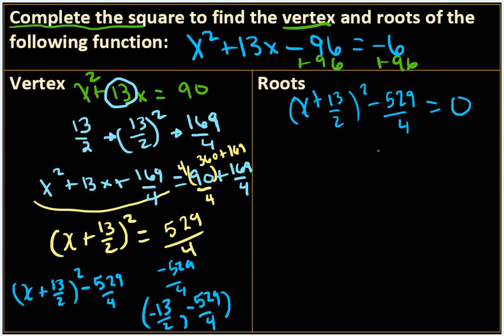We're going to solve for the square, so I'm going to add 529 over 4 to both sides. So I'm going to get x plus 13 over 2 squared equals 529 over 4.